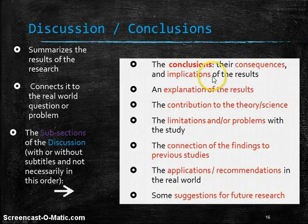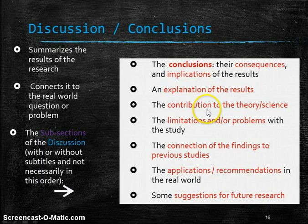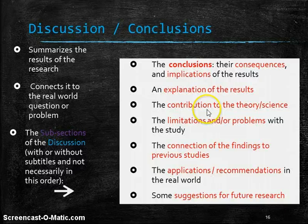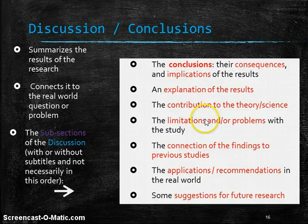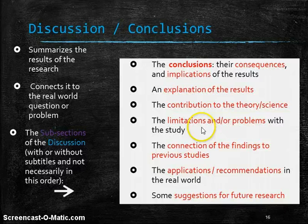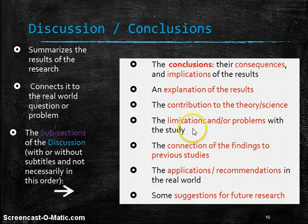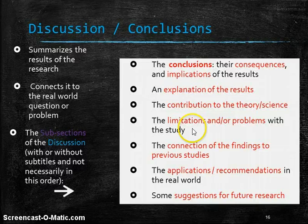Of course, the conclusions, what are the consequences, what are the implications of what was found? It's explaining the results. It's talking about how this new information contributes to the theory or to the science. But it also talks about limitations or problems. When a research study is designed, you do it as best you can, but sometimes some problems come up and you only discover them afterwards. So those are always mentioned in the study. There was a problem with this. There was a problem with that. We thought we would have 100 subjects, but in the end, we only had 64, and that's a little small of a sample.